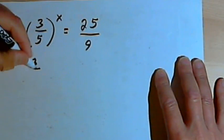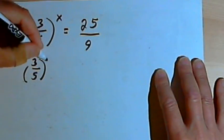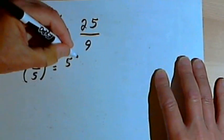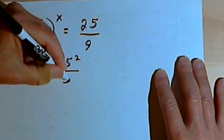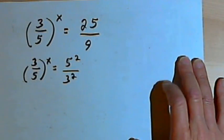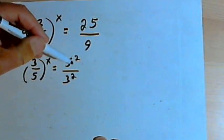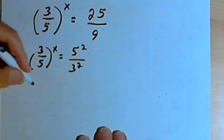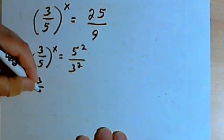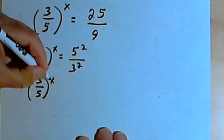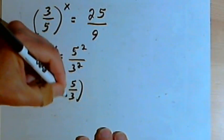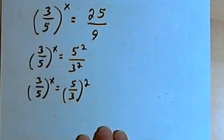So let's convert this. I'm going to do 3 fifths to the x equals 5 squared over 3 squared. And then I'm going to rewrite that 5 squared over 3 squared as just 5 over 3 squared. So I'll have 3 over 5 to the x equals 5 over 3 squared.